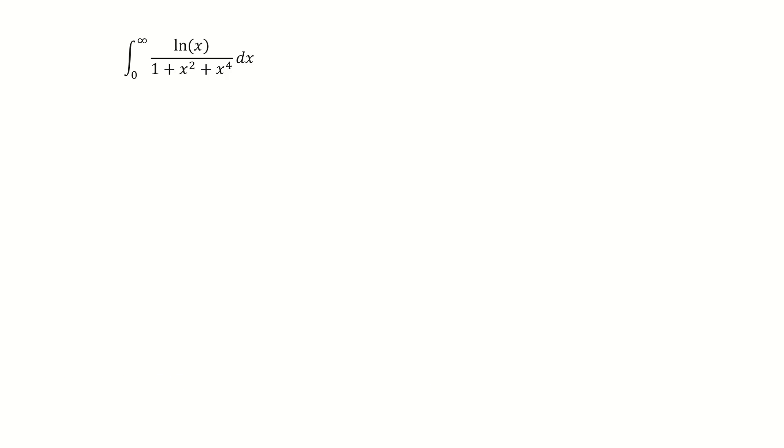So here, instead of solving it in a real domain, we consider this integral in a complex domain. First let's find the zeros for the denominator, and this will be the poles for this integrand function. First we let the denominator equal to zero, and then this z-square term can be split into two terms, and next we complete the square, and then we do the factorization.